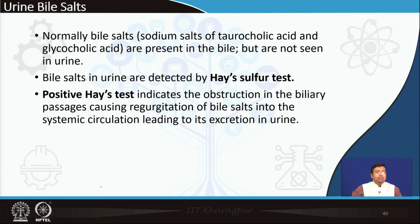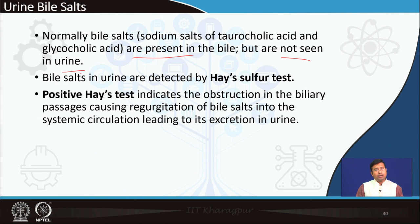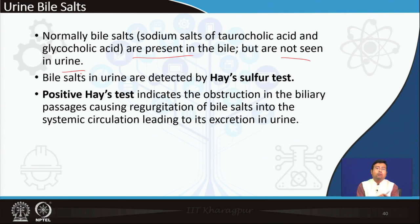Bile salts: normally, bile salts are present in bile but are not seen in urine. However, bile salts — sodium taurocholate and sodium glycocholate — are excreted in urine in case of obstructive jaundice, because bile is being regurgitated rather than going via the canaliculi into the gut. Bile salts are also raised in blood, causing symptoms like itching and pruritus. Bile salts in urine are tested by Hay's sulphur test, and a positive Hay's sulphur test in urine indicates obstructive jaundice.